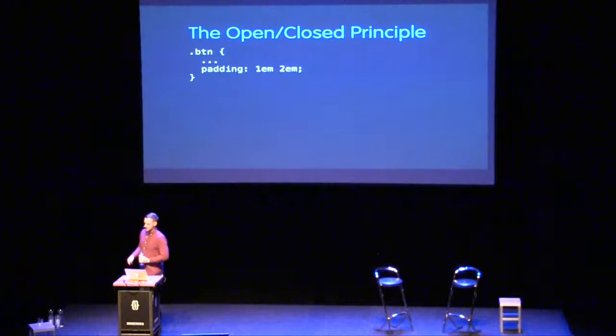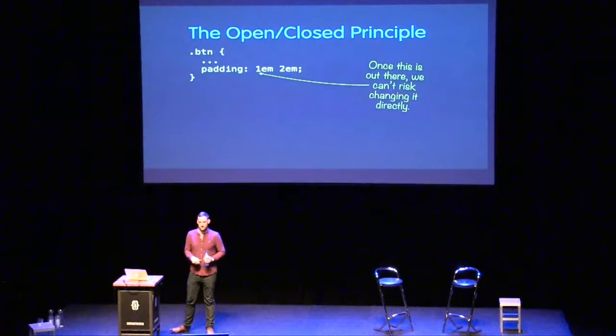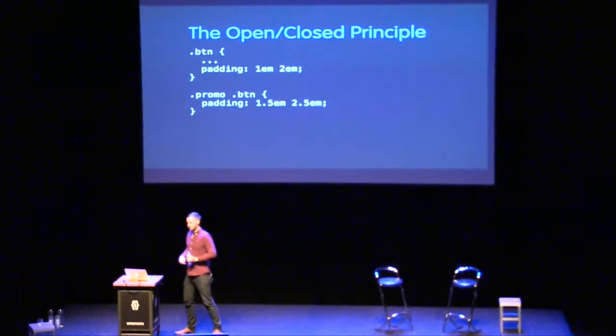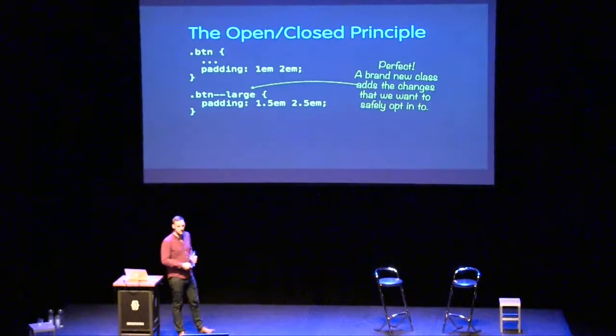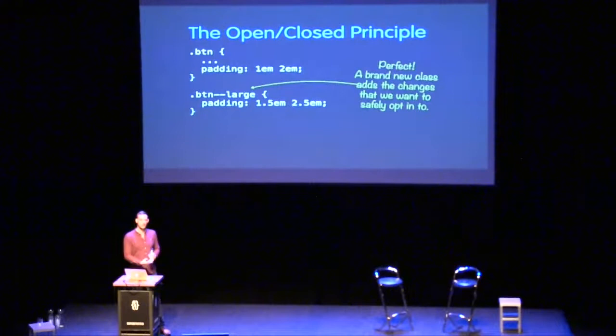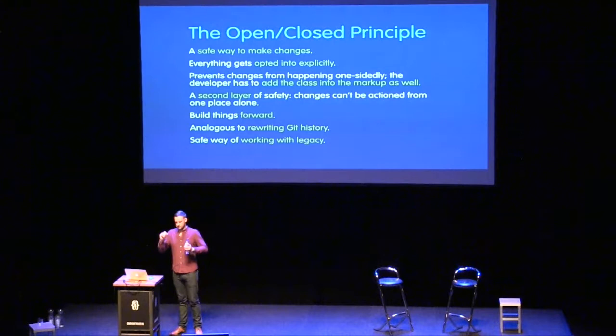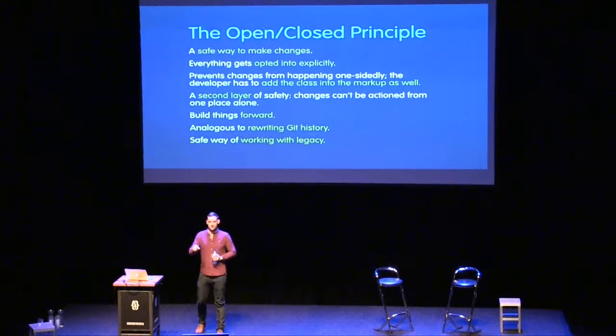In CSS this works really nicely because it uses the inheritance model. Let's go back to buttons — `1rem` padding. Once it's out there, it's risky to change it. If we want a slightly larger button, we could add a contextual override like `.promo .button`, but that violates immutability and needlessly raises cyclomatic complexity. The simplest solution: we are open to extension but closed for modification — add a new class that inherits and extends the functionality.